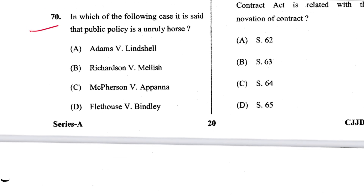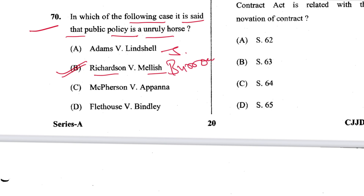Question 70: In which case is it said that 'public policy is an unruly horse'? In Richardson vs. Mellish. B is the answer — said by Justice Burrough.